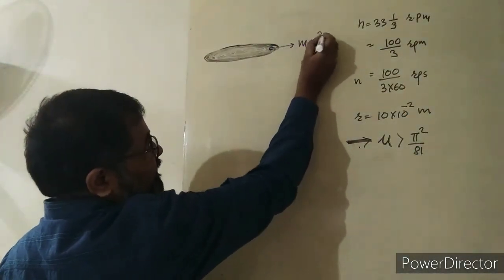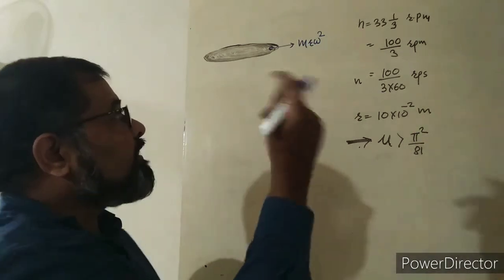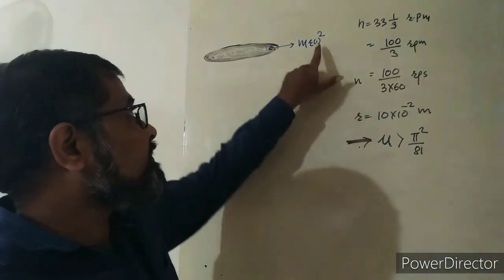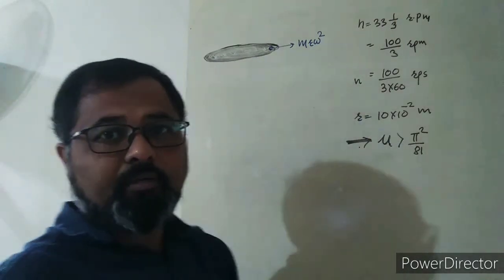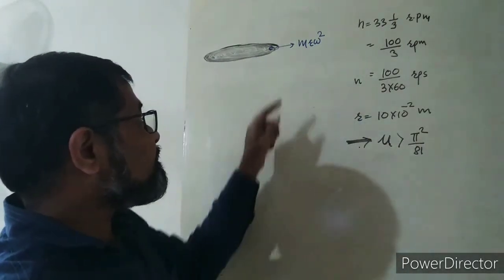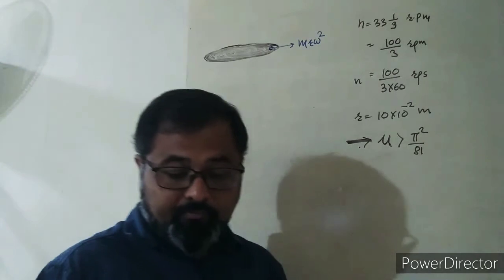Since frequency is given, when frequency is involved, use the formula mr ω². Just like in the last numerical problem 11, there was a fan blade with a particle resting on it.